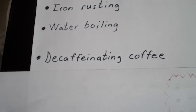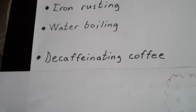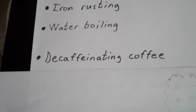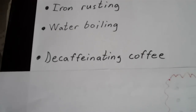Decaffeinating coffee — physical or chemical? To decaffeinate coffee, all you're doing is taking the caffeine that's already in coffee out of the coffee. That would actually be considered a physical change — you're just filtering out the caffeine. All the chemical structures of everything still remain intact in this process. Physical change.